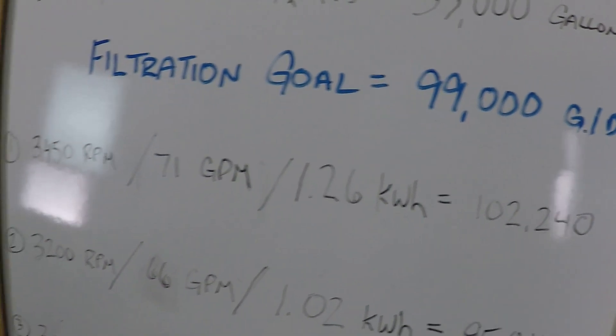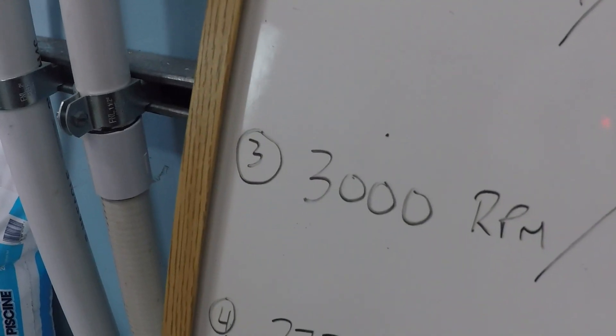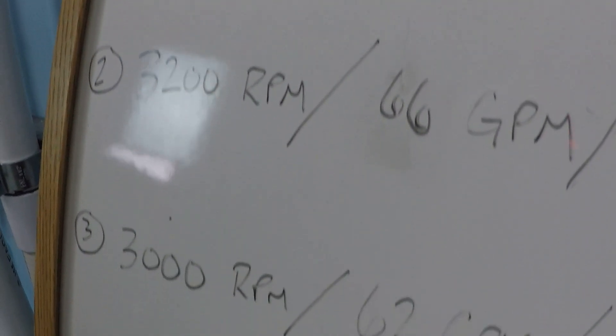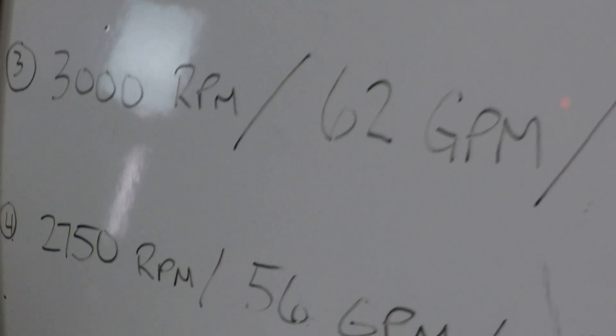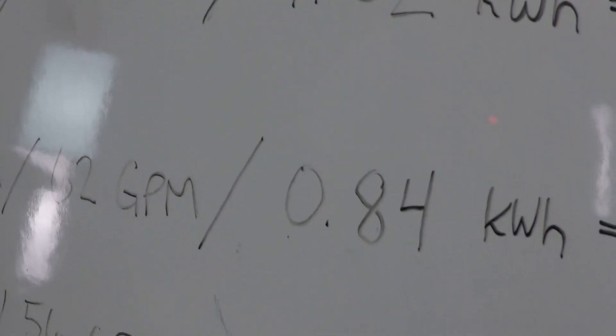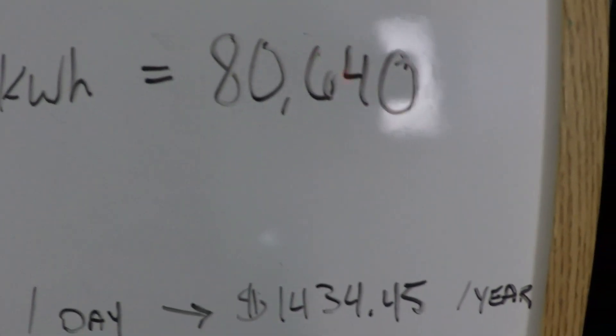And what this calculation was showing was a small reduction in the RPM will have a small reduction in the flow rate that you're able to achieve, but it will have a fairly substantial reduction in the amount of power consumed. And this was shown in this calculation here.